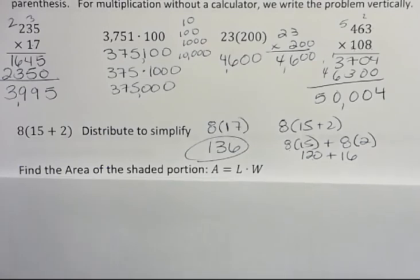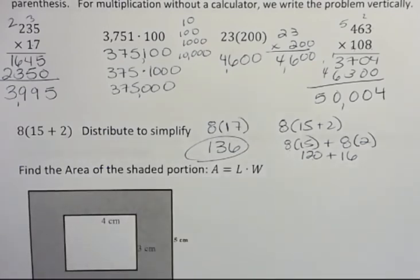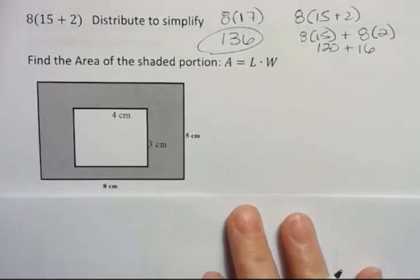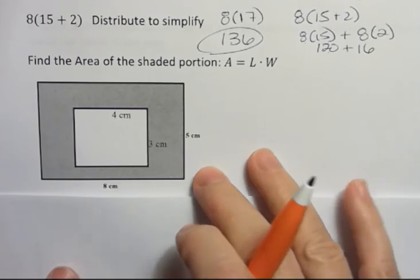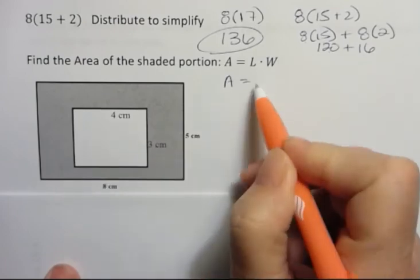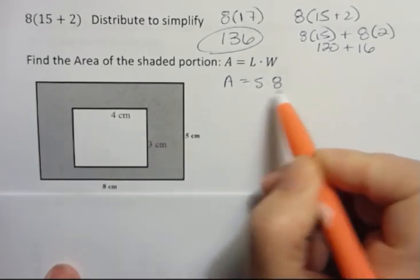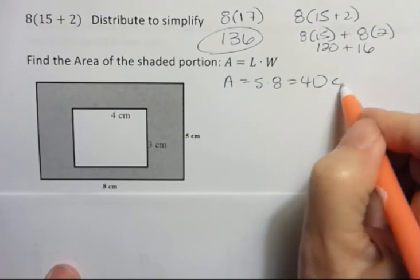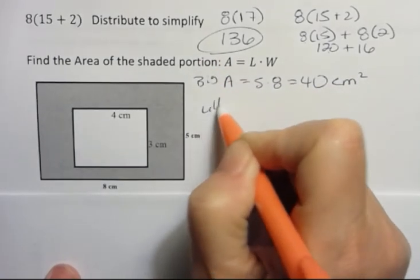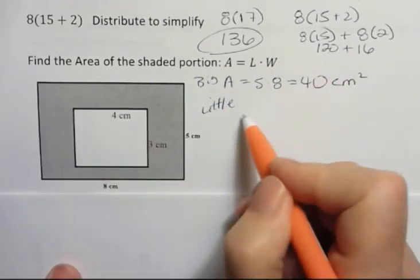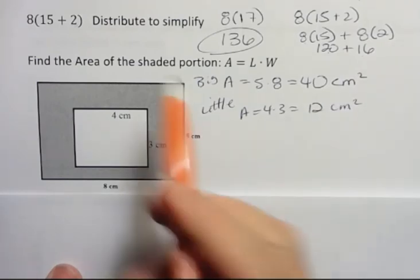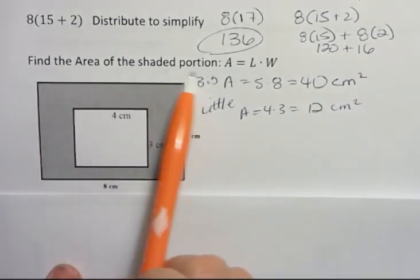And finally, we practice multiplication by asking you to find the area of a shape. So let's look at this shape right here. And the area formula is just length times width. So if I wanted you to find the area of the entire big rectangle, I would say that's going to be 5 times 8. And 5 times 8 is 40. And we're going to talk about that as centimeters squared. This is the big one. What about the little one? Well, the little one is 4 times 3, and that's 12 centimeters squared.